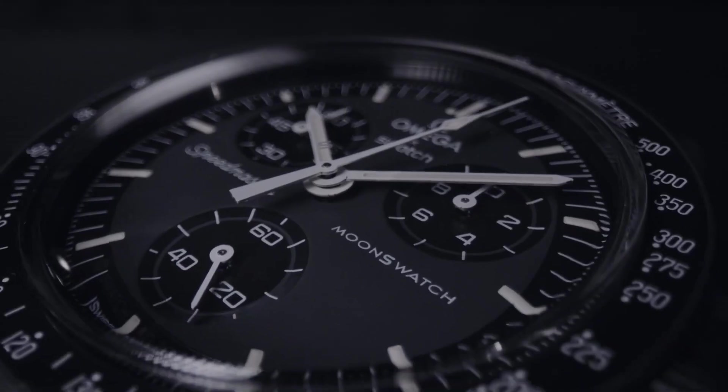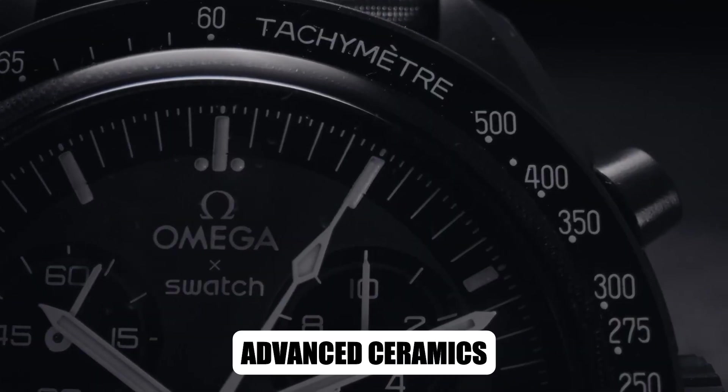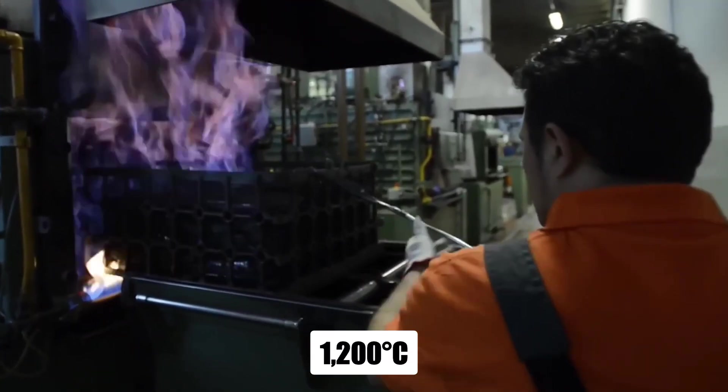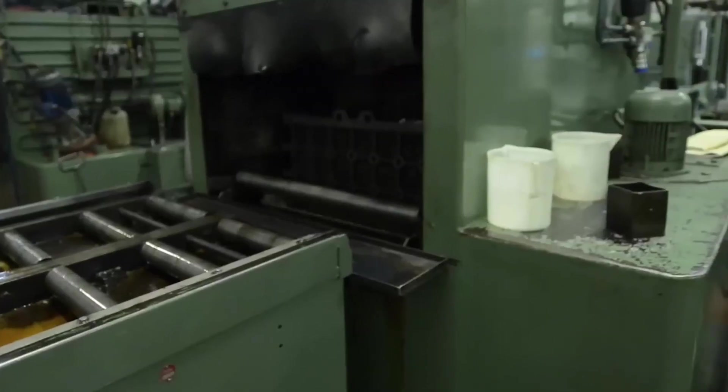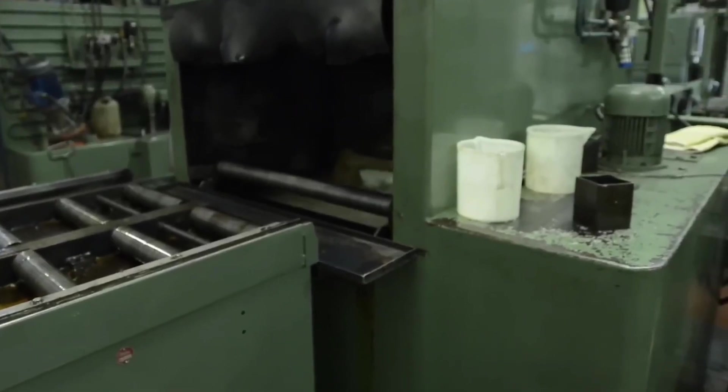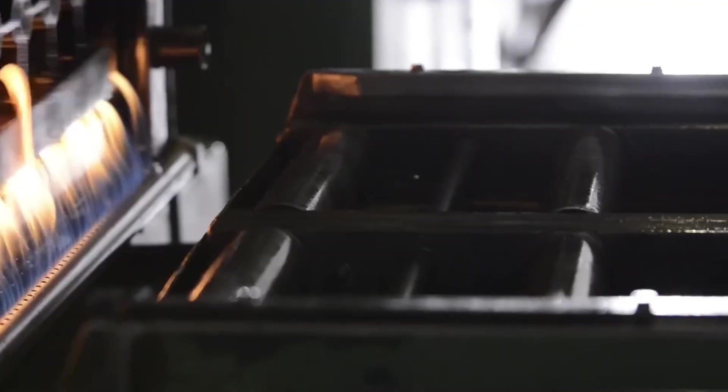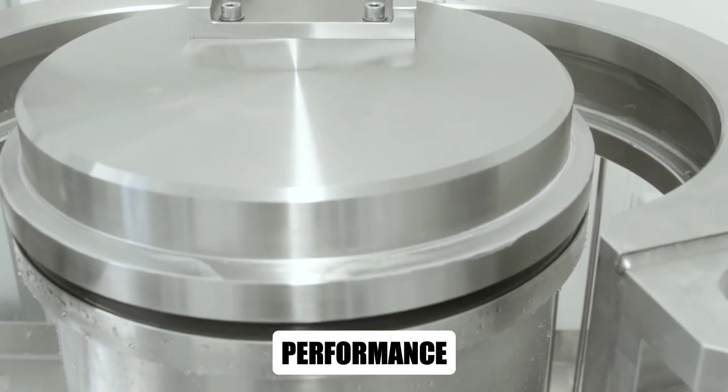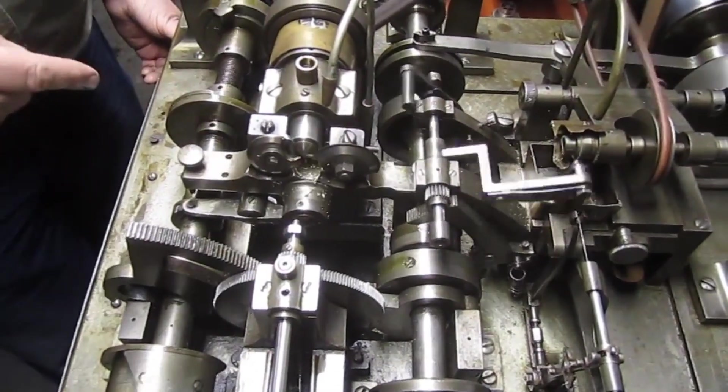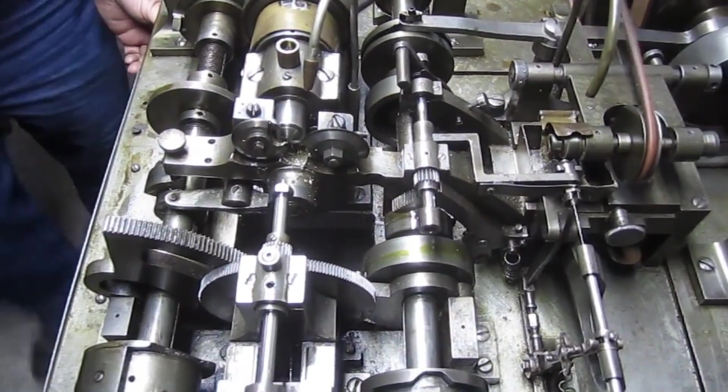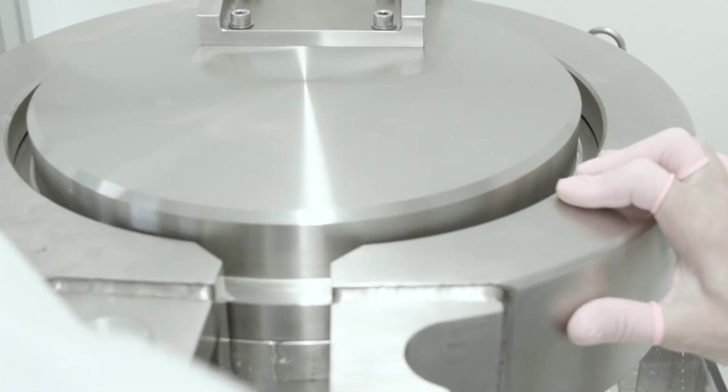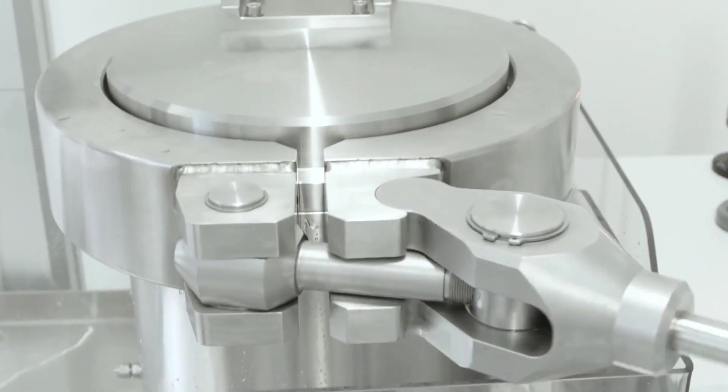And beyond metal, Omega turns to advanced ceramics, fired at temperatures exceeding 1,200 degrees Celsius, creating bezels and cases virtually impervious to scratches. Every choice here is deliberate: durability, aesthetics, and performance intertwined. Before the first screw is cut or jewel is set, the DNA of an Omega watch is already forged from materials designed to withstand time itself.